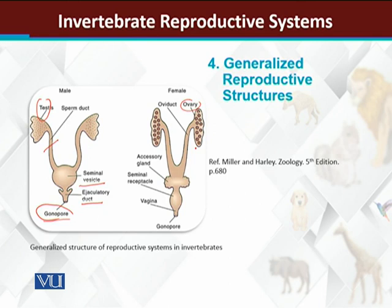In the female case, there are ovaries which produce eggs. When eggs are mature, they pass through the oviduct, then go to the seminal receptacle where sperm for internal fertilization is stored. After the seminal receptacle comes the vagina, then the gonopore where the egg is released.